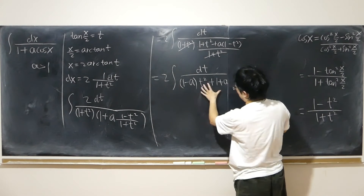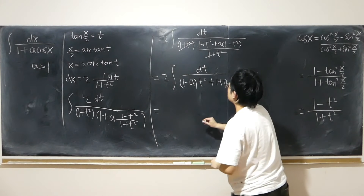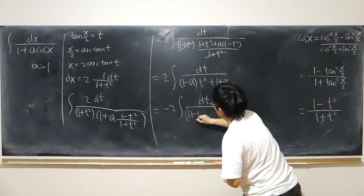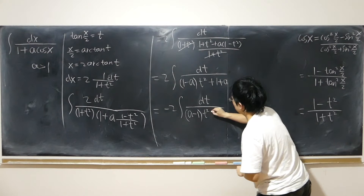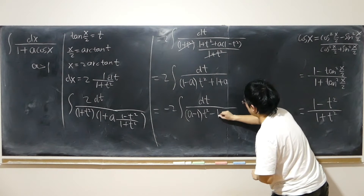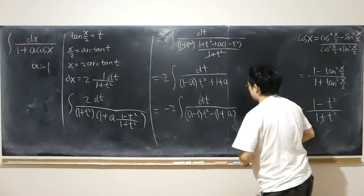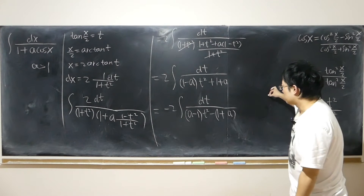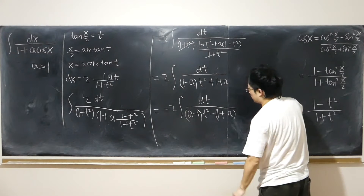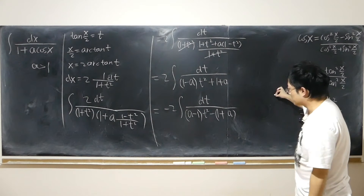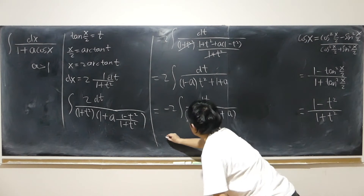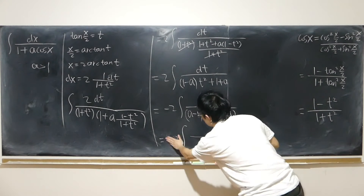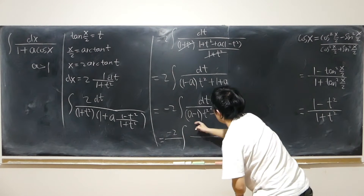If I multiply by negative over negative, I get negative 2 dt over (a minus 1) t squared minus (1 plus a). This way (a minus 1) is positive. I factor out (a minus 1) to prepare for partial fractions.